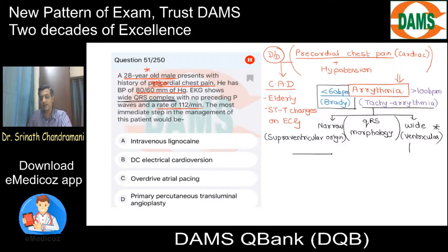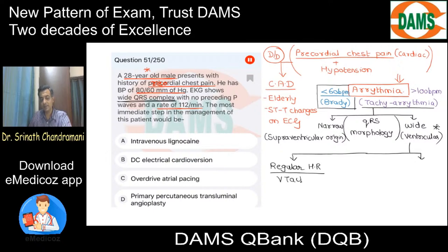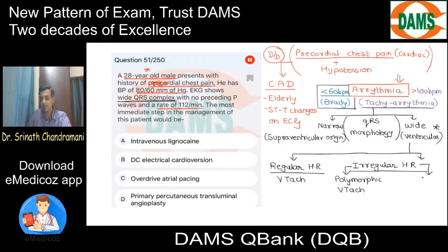Within the ventricular arrhythmia, we want to subclassify further. If it has a regular heart rate, we consider ventricular tachycardia. If it is associated with an irregular heart rate, we consider either polymorphic VT — torsades de pointes as it is more famously known — or it can be ventricular fibrillation. If it were a narrow QRS with no preceding P wave, we would think of atrial fibrillation.